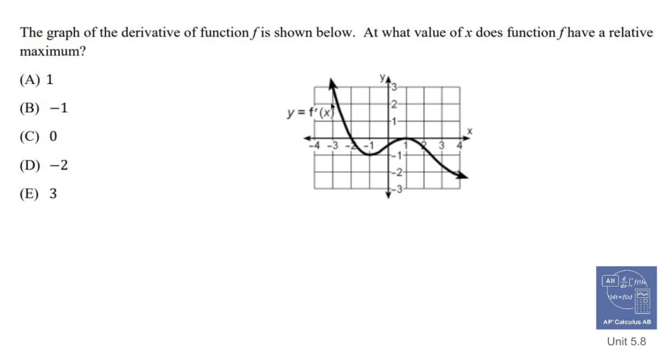Okay, so this is the derivative. A relative maximum occurs when your derivative goes from positive to negative because that would represent a relative maximum.